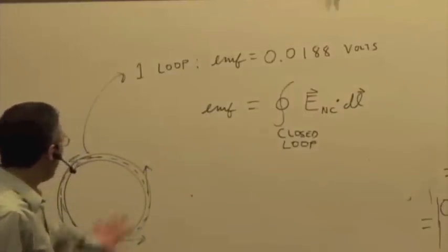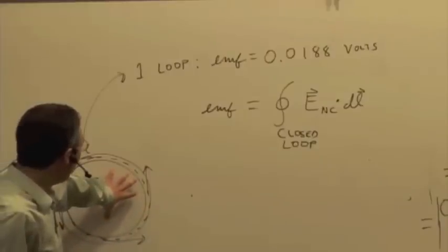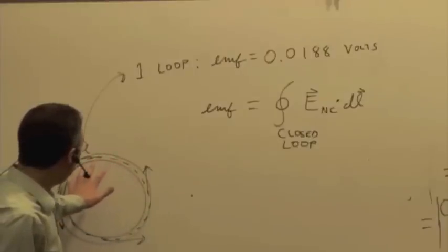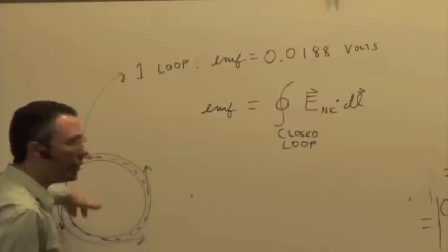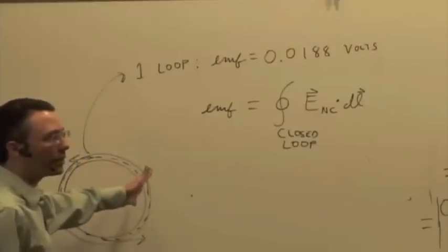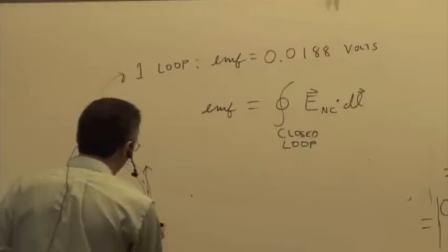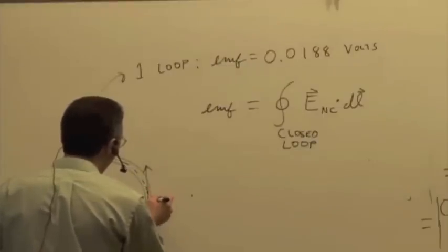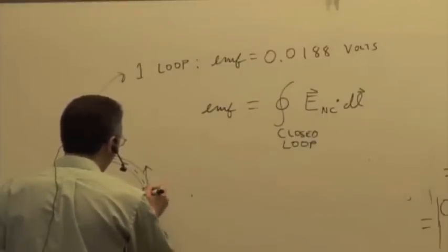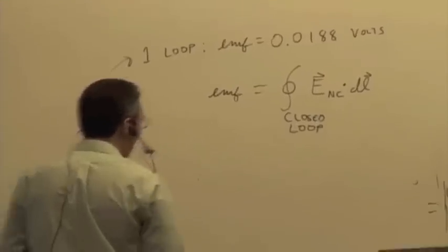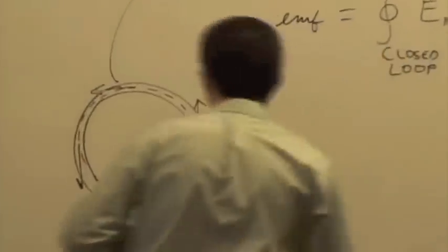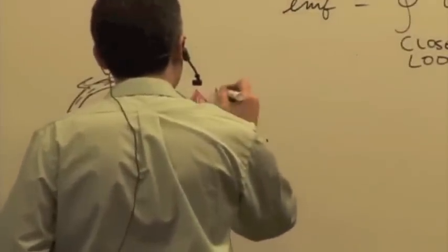Well, by symmetry, I would expect that the electric field should be changing in direction, obviously, but the same magnitude everywhere around this loop, right? And so we've dealt with situations like this before. If I'm going around the path, I'm thinking about breaking this up into delta L vectors, and each little segment of that path has a delta L vector that is parallel to the electric field at that location, right?